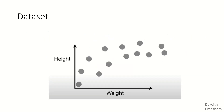Friends, there is a dataset — one simple dataset. One dependent variable and one independent variable. Assume weight as one of the dependent variables and height as one of the independent variables. Those are the data points, and this is how we scatter the data.